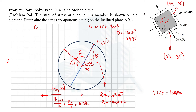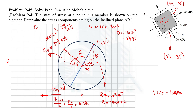Now consider the right-angle triangle for the new radius line at plane AB. The perpendicular of this triangle represents the shear stress at plane AB. Using the sine formula: sin(59.75°) = shear stress at AB / radius = shear stress at AB / 40.31. Solving, the shear stress at AB = 34.8 MPa.